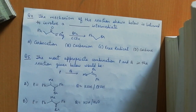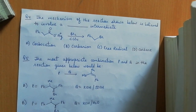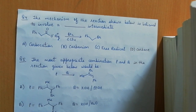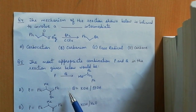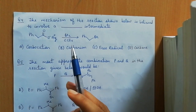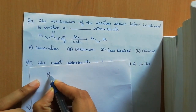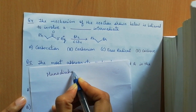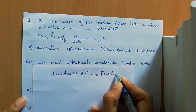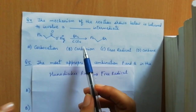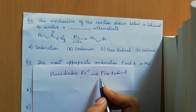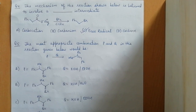Question four: the mechanism of the reaction shown below involves which intermediate — carbocation, carbanion, free radical, or carbene? Looking at this reaction, this is the Hantzsch reaction. The intermediate in the Hantzsch reaction is a free radical, so option C is correct.